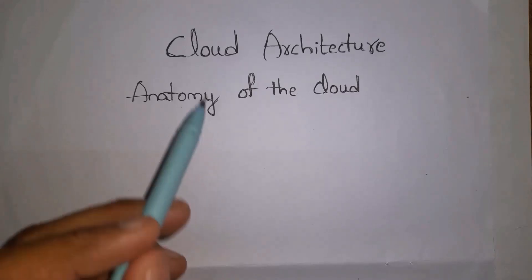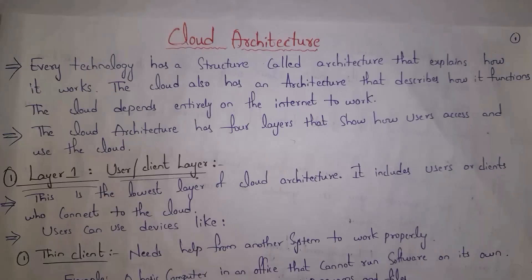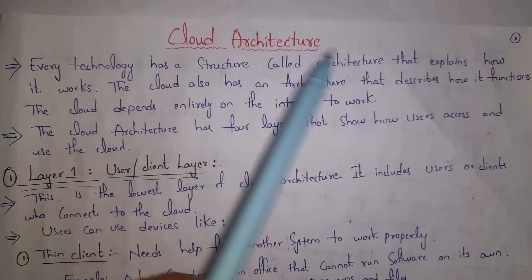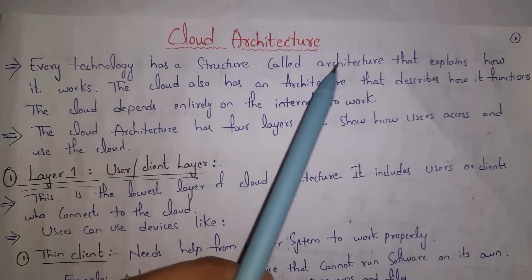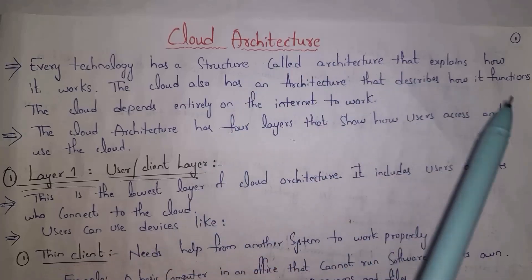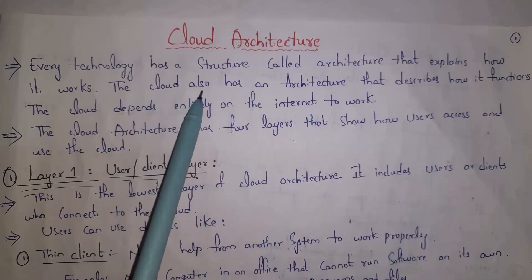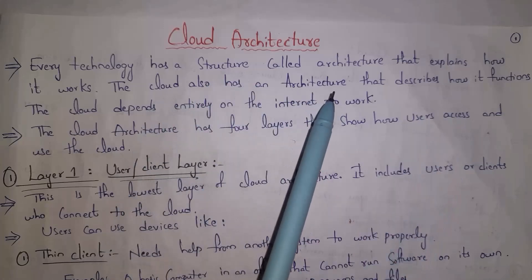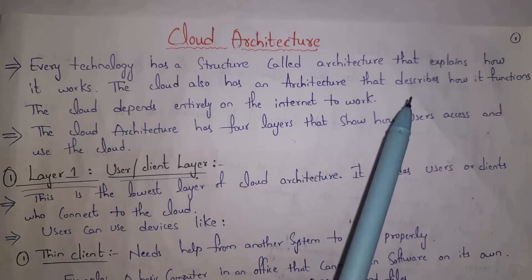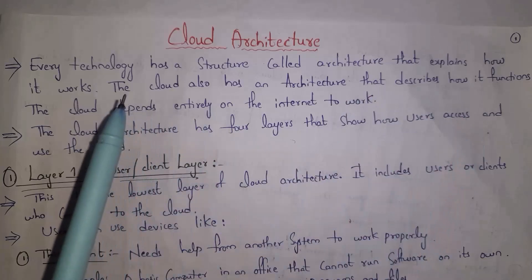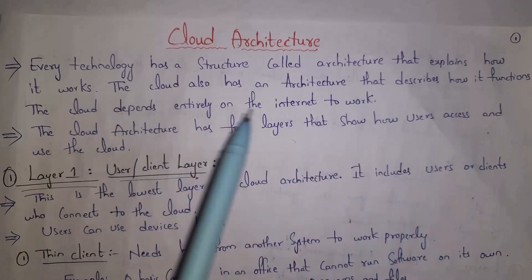First, I will explain what is cloud architecture. Each and every technology has a structure, and we call that structure its architecture. By seeing an architecture we can clearly know how the technology works. In the same way, cloud also has an architecture. By seeing cloud architecture we can clearly know how cloud functions. As we know, cloud depends on the internet to work.